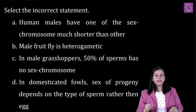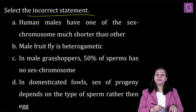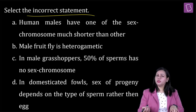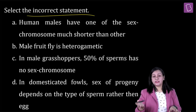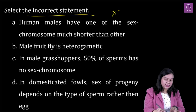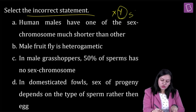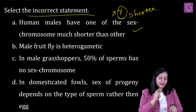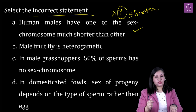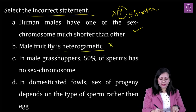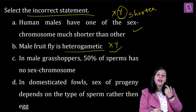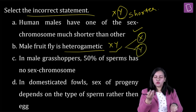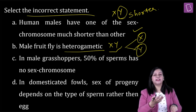Let's have a look at this question: Select the incorrect statement. First statement says human males have one sex chromosome much shorter than the other. We know the sex chromosomes of human males are XY, and the Y chromosome is actually much shorter than the X chromosome, so statement A is correct. Looking at option B: male fruit fly is heterogametic — yes, because male fruit flies have the XY chromosome combination, producing gametes with either X or Y chromosome, hence they are heterogametic.